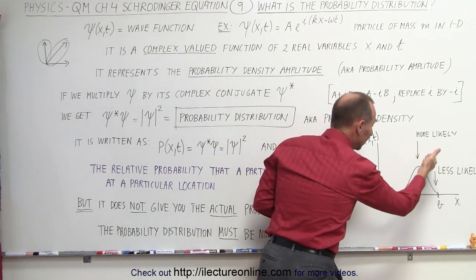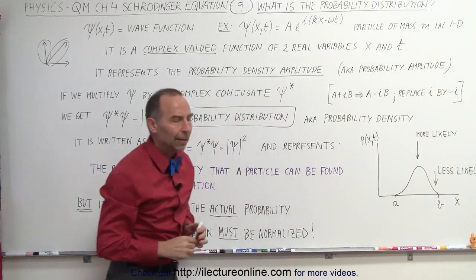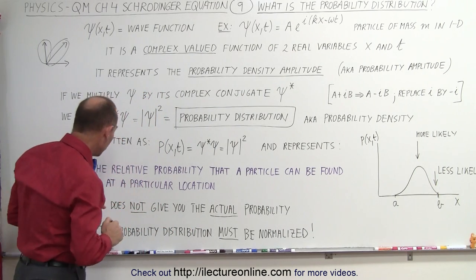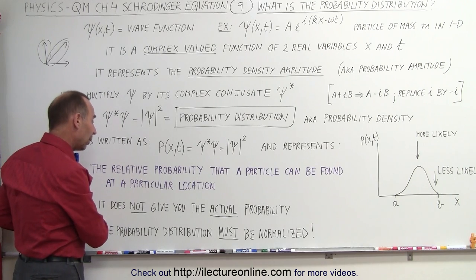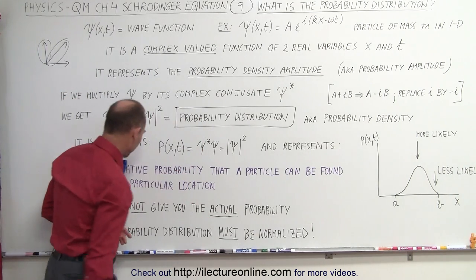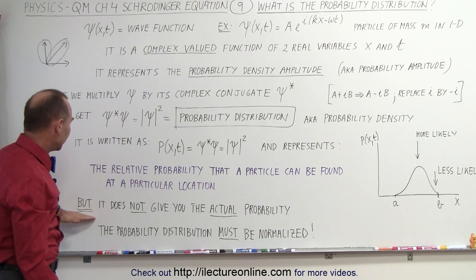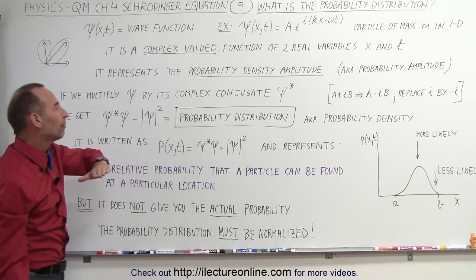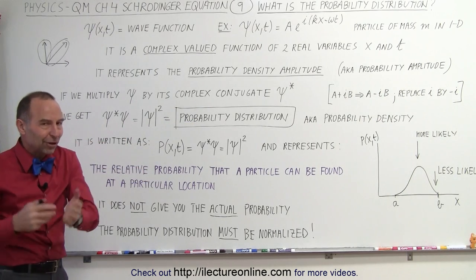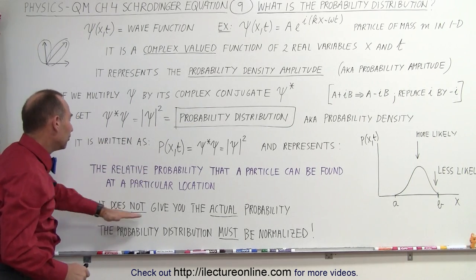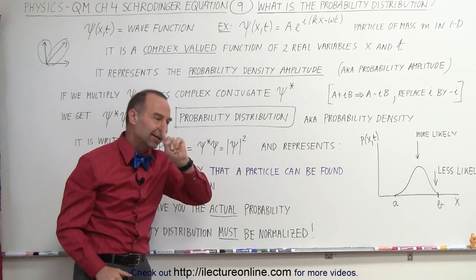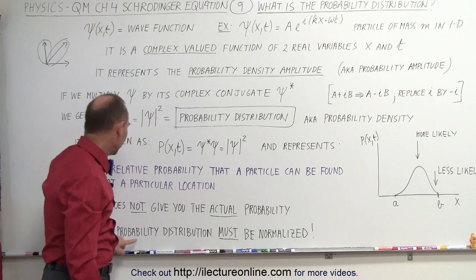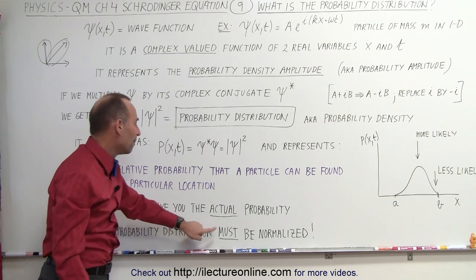The higher the amplitude, the more likely. The lower the amplitude, the less likely. So how do we get the actual probability function? To do that, we're going to have to normalize the function. Realize that the relative probability function, or the probability distribution function, or the probability density function — however you want to call it — does not give you the actual probability. We're not there yet. We have to normalize. The probability distribution must be normalized.